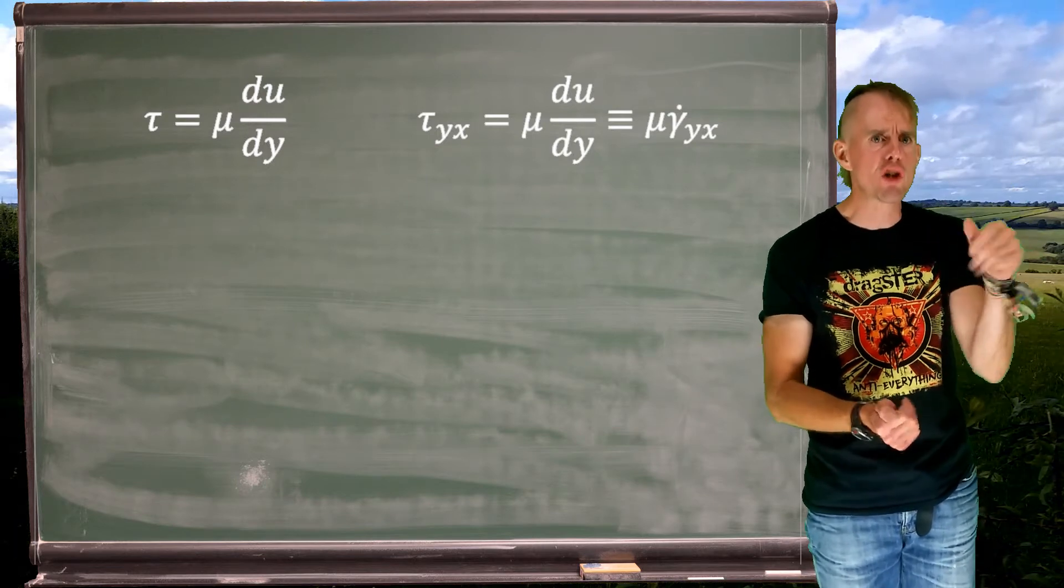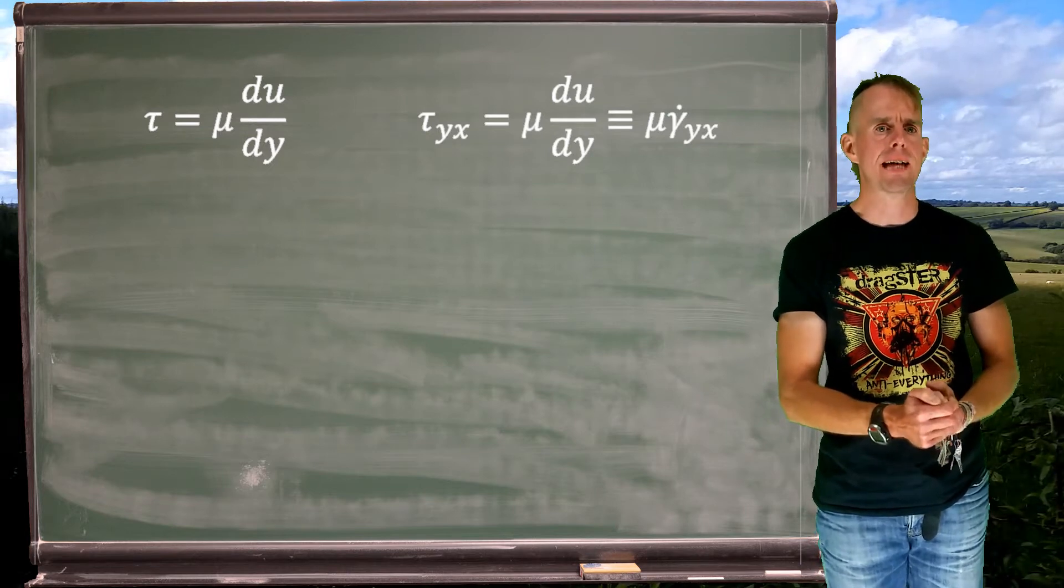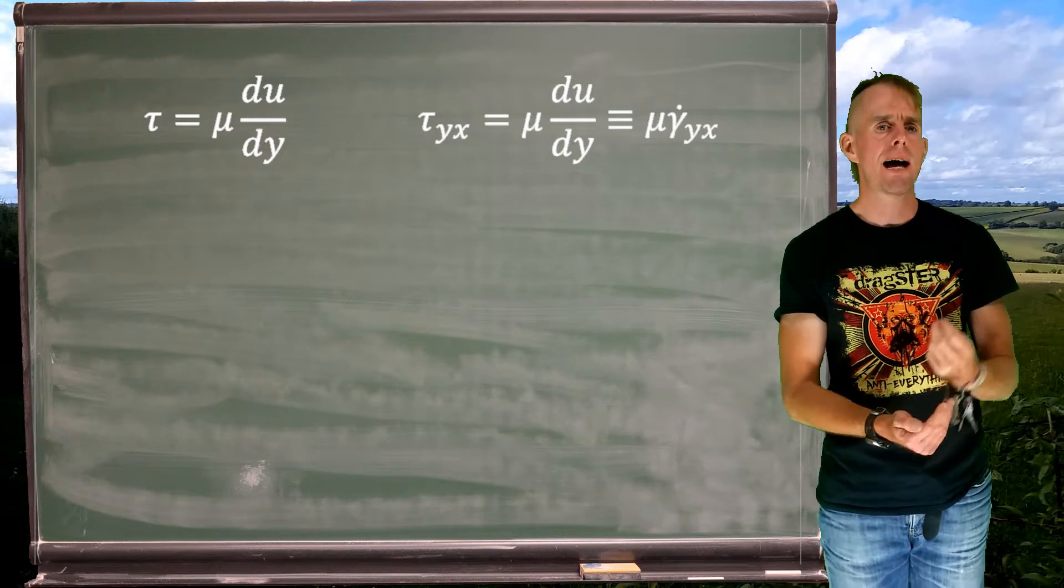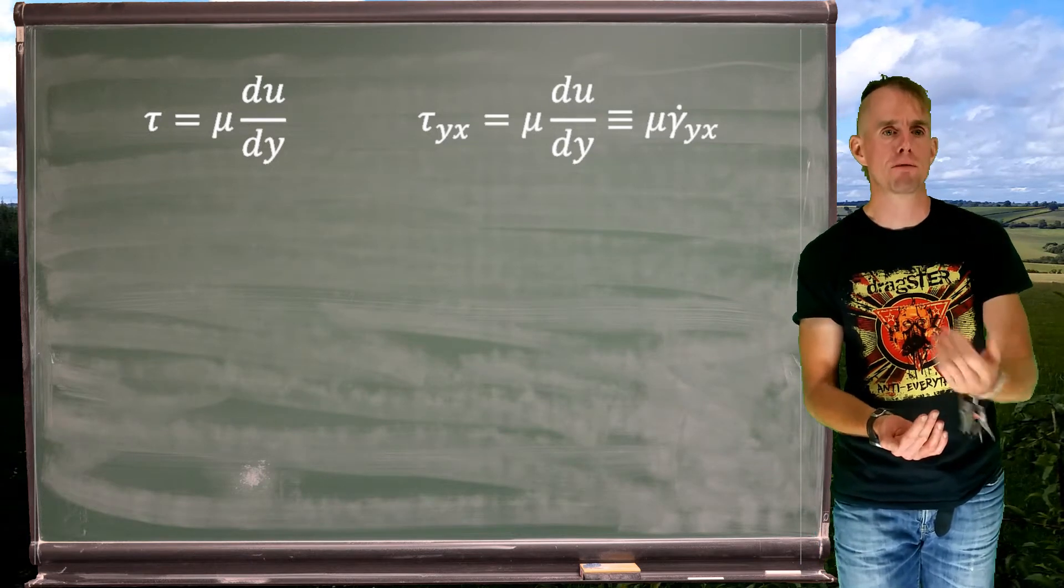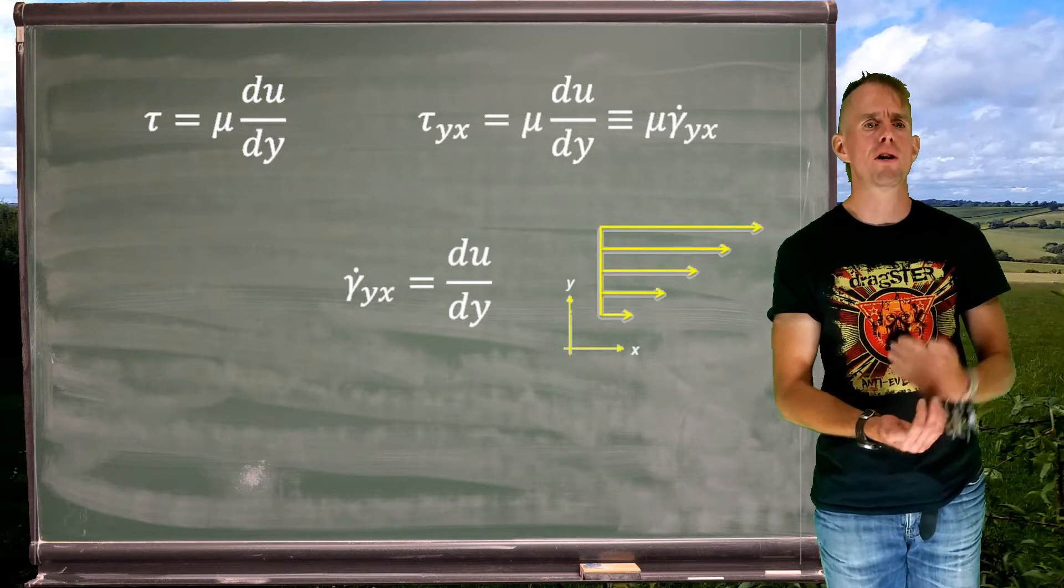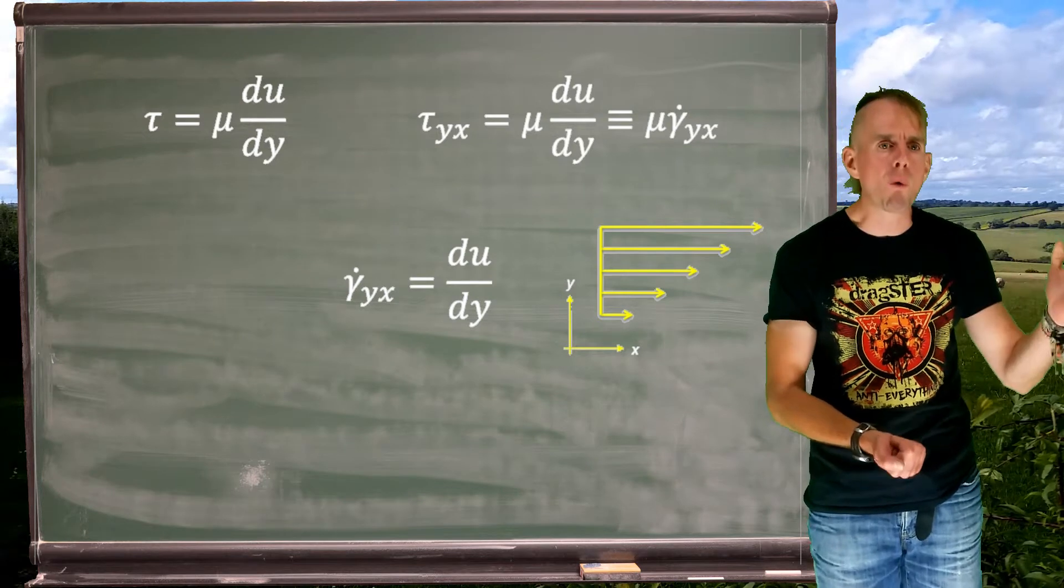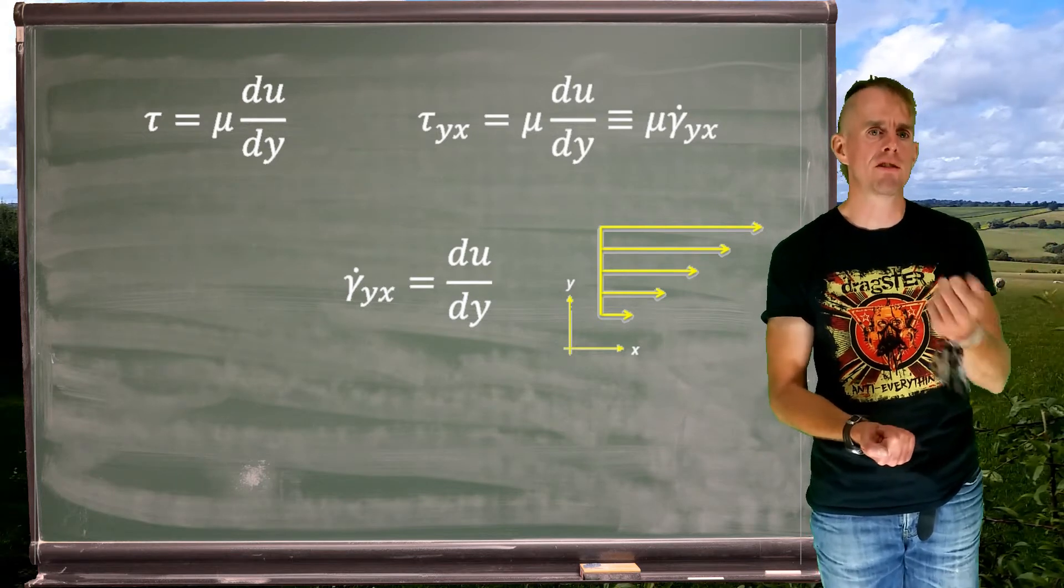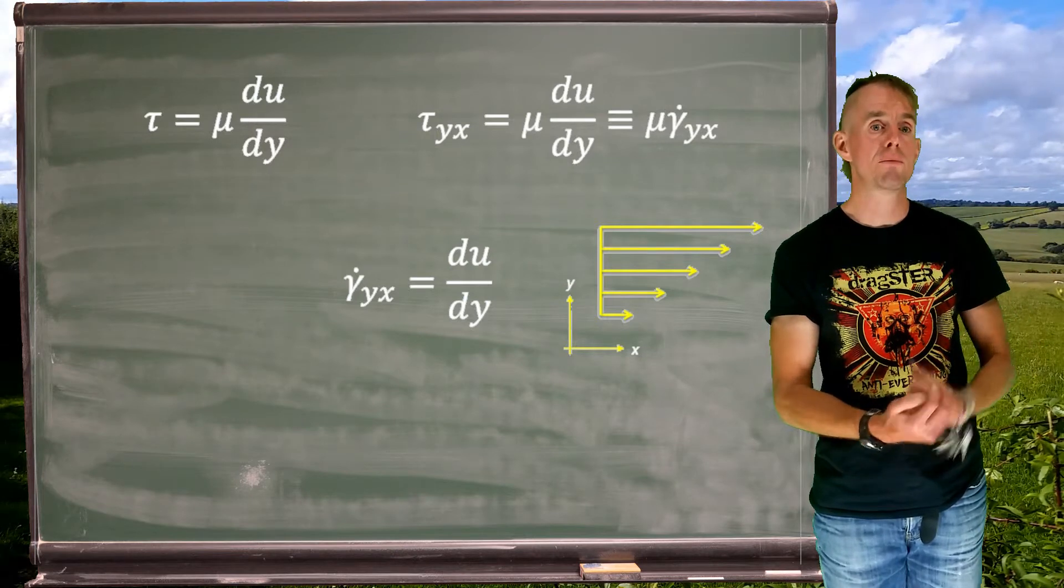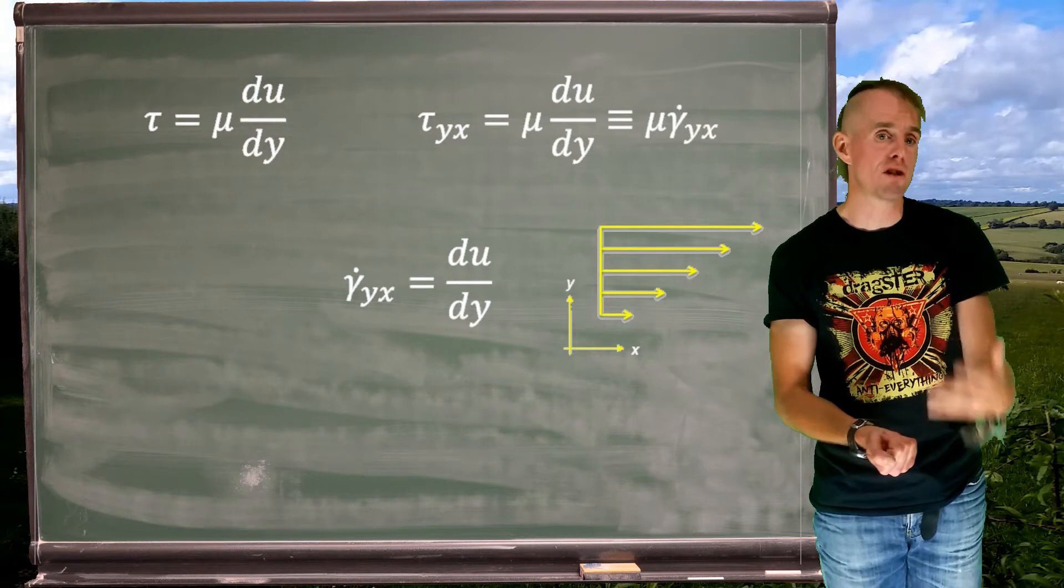Now, that velocity gradient, du by dy, we're going to call gamma dot yx. Gamma dot is one element of my rate of strain tensor, and we can identify which element by its subscripts. So gamma dot yx means that I've got a gradient in the y direction of the x-direction velocity, as we can see in that little diagram. The arrows are the direction of the velocity, and we can see they increase with increasing y.